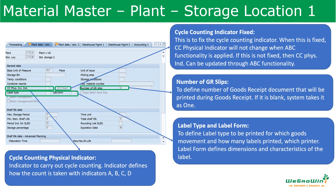Number of GR Slips defines how many goods receipt documents will be printed during a goods receipt. If left blank, the system takes it as one. Label Type and Label Form are used to define what label type is to be printed, for which GR movement, how many labels to print, and which printer to use. Label Form defines the dimensions and characteristics of the label. Please note that some fields are client-specific, some are plant-specific, and some are store location-specific, so please go through each field to understand and define them accordingly.